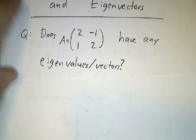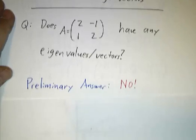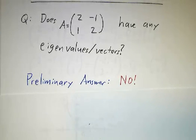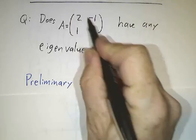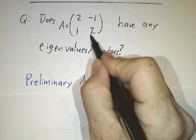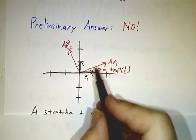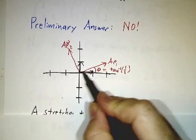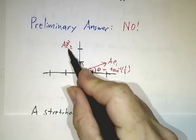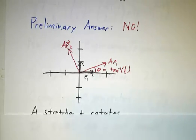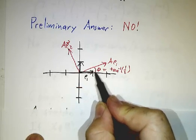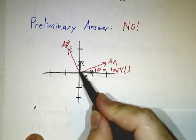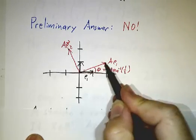If you think about how this acts in the plane, you might think the answer would be no. Because what this matrix does is it sends e1 to (2,1) and e2 to (-1,2). Now here's a picture of that. What it seems to be doing is rotating by this angle, the arctangent of a half, and stretching by this length, which is root 5.